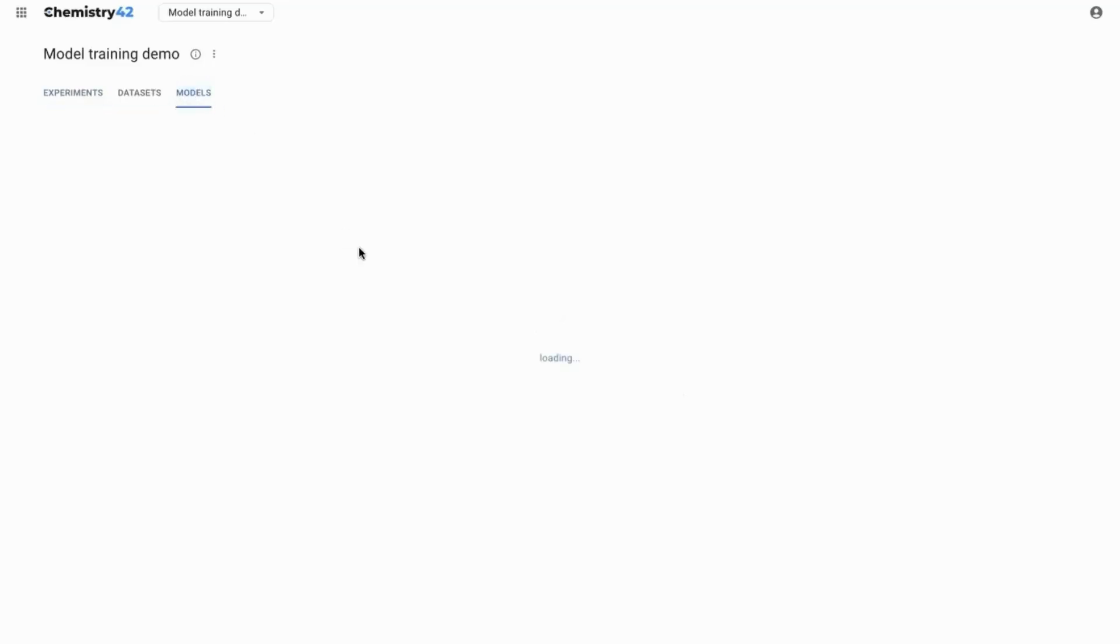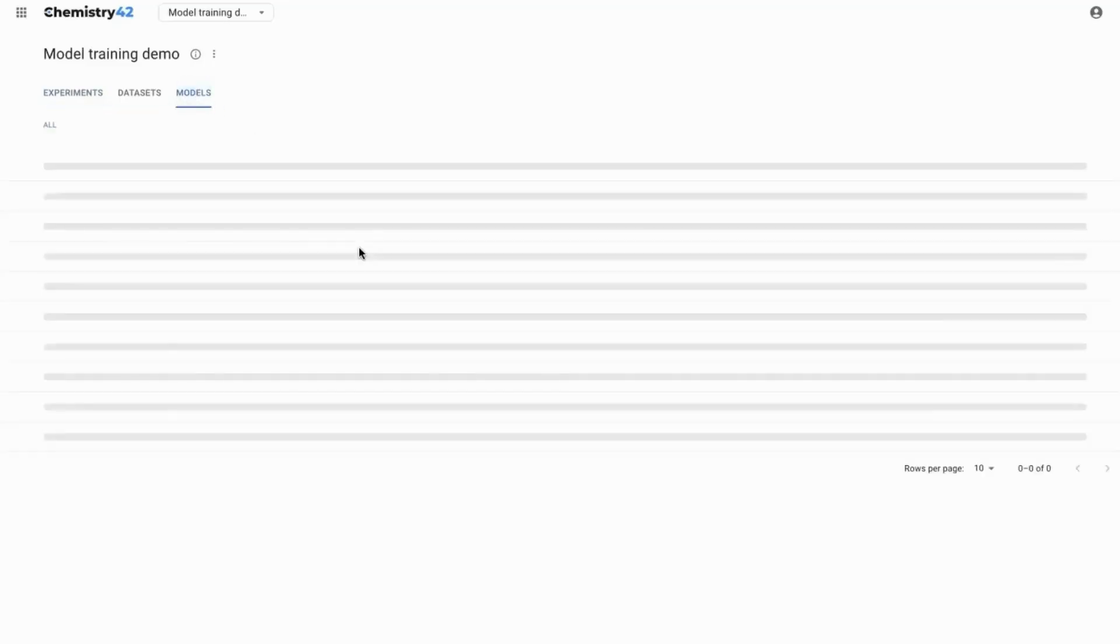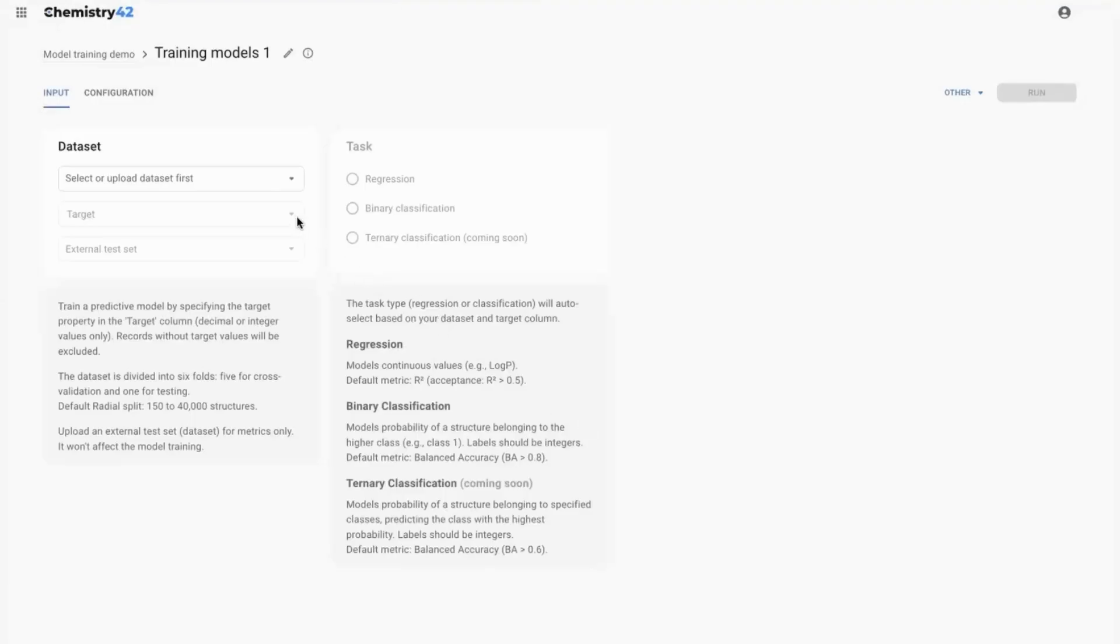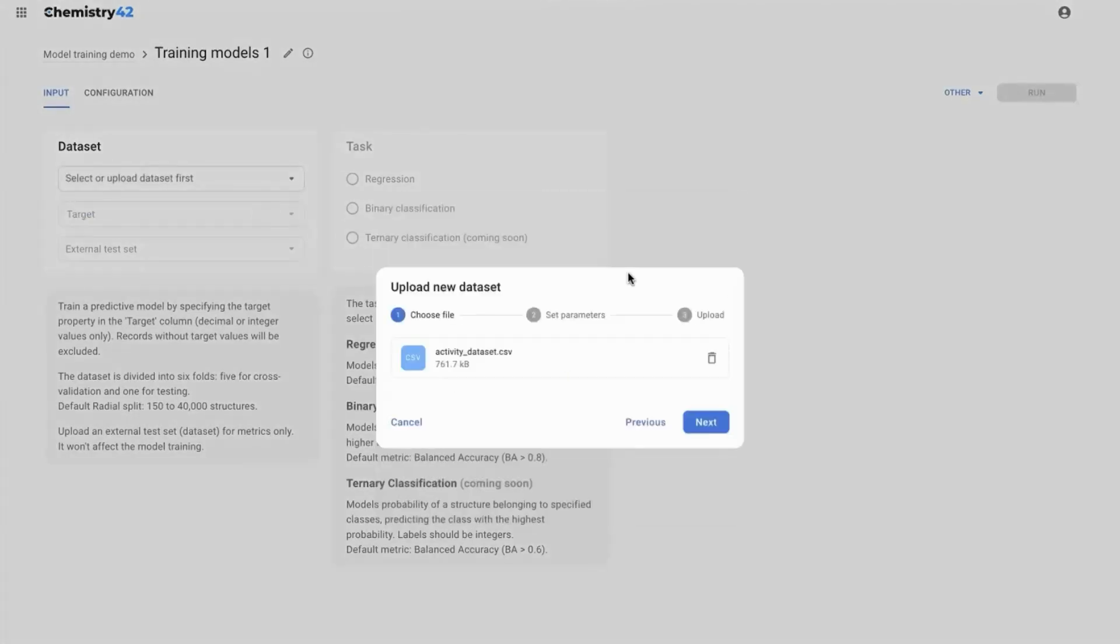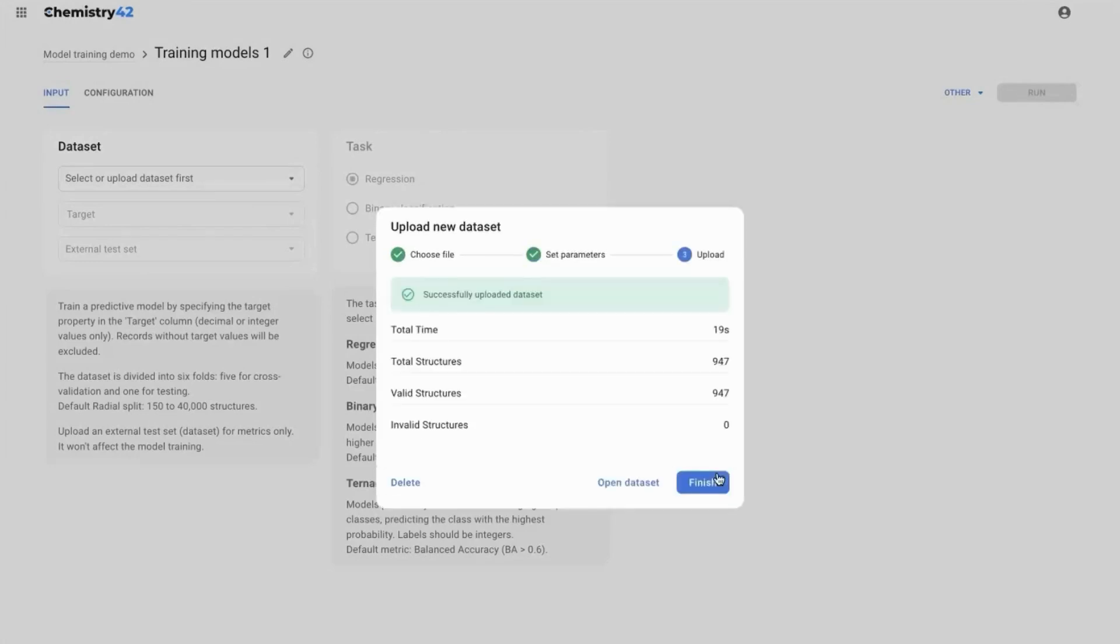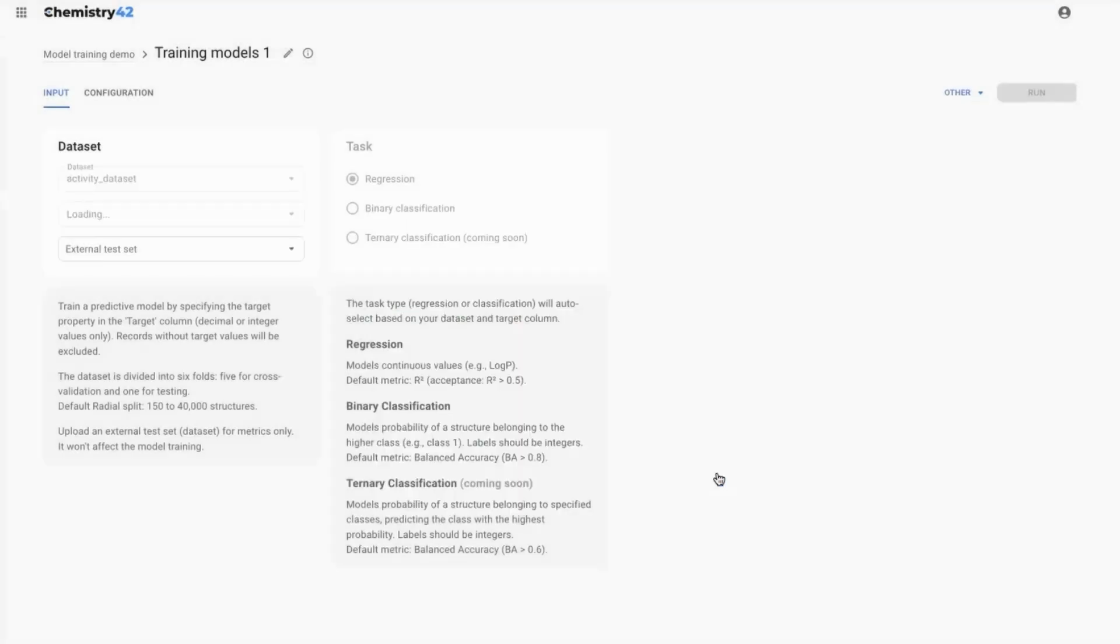Now let's have a look at the model training module on the Chemistry42 platform. Choose the models tab and create a new training job. Upload the dataset you would like to use for training. Choose the smiles and ID columns. Finalize the upload of the dataset and choose the column with the target values.